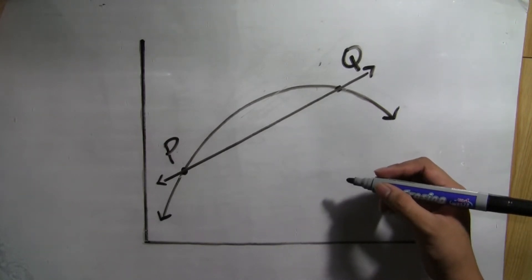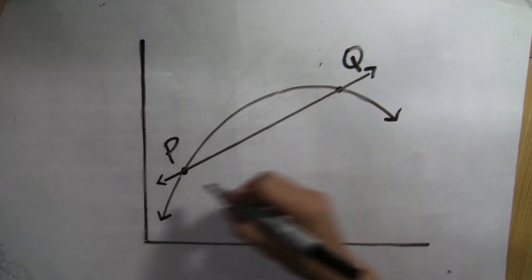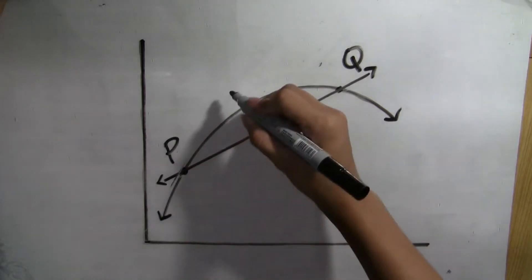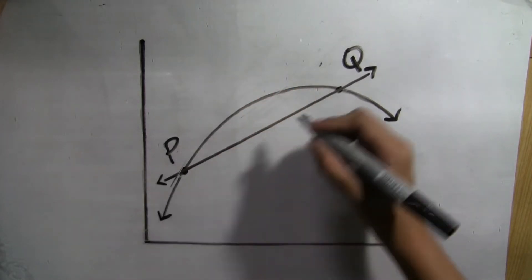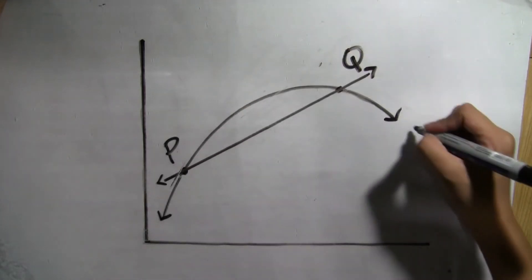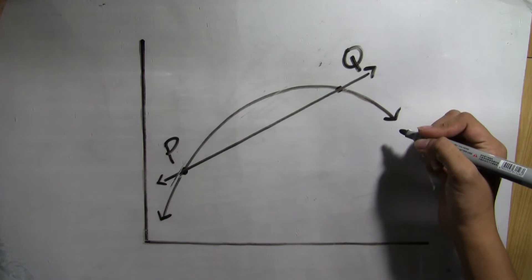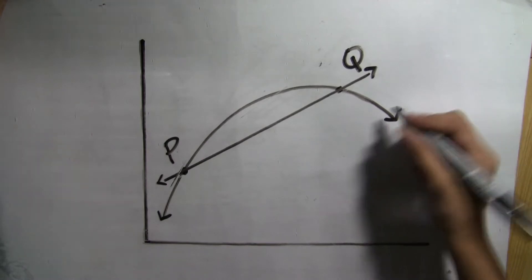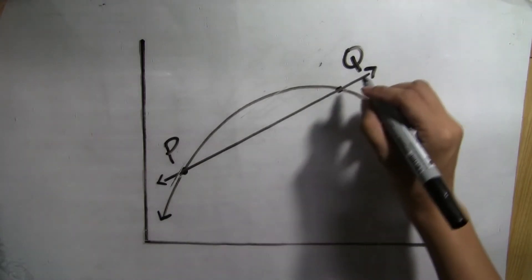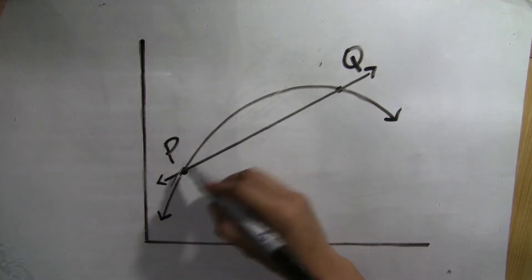Earlier, we have defined a tangent line, which is a straight line that touches the graph at only one point. On the other hand, a secant line is a straight line passing through two points of a function.